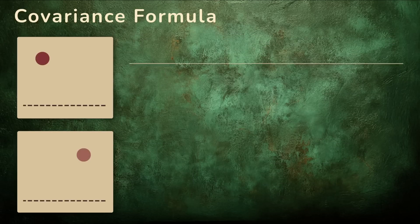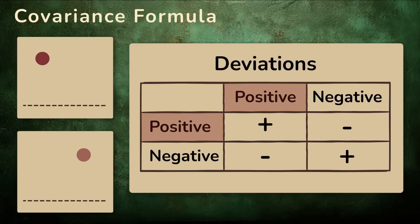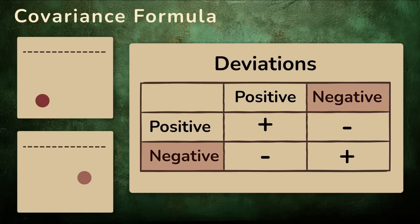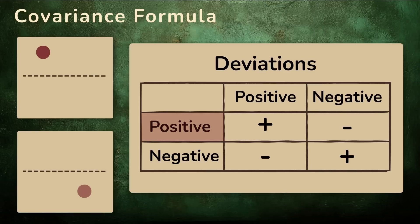Here's why that matters. If both values are above average, the deviations are positive. Multiply them, and the product is positive. That's a positive contribution to the covariance. Same thing if both are below average. The deviations are negative, but their product is still positive. They're moving together. But if one value is above average and the other is below, the product is negative. That pulls the covariance down. So each pair of points gives us a product that tells us whether they're moving together or in opposite directions.